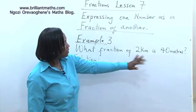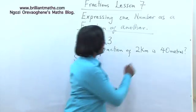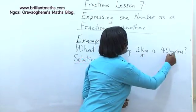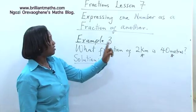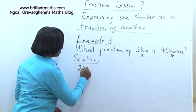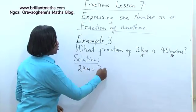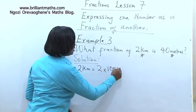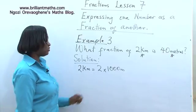Also, the two quantities we are comparing are not in the same units. So the first step is to change them and make sure they are in the same units. 2 kilometers is equal to 2 times 1,000 meters, because 1,000 meters make a kilometer.